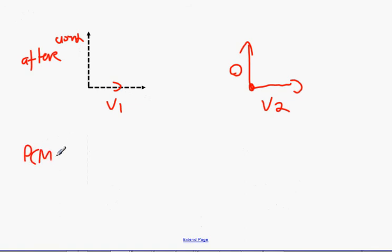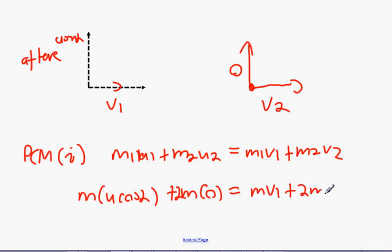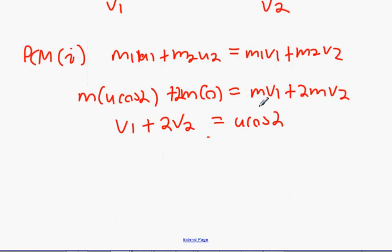We're next going to use PCM, principal conservation momentum, along the i-axis. M1 V1 plus M2 V2. So we're going to have M times U cos alpha. Might as well leave it as U cos alpha. M times 2M times zero equals M V1 plus 2M times V2. And what we're going to get here is 2V2. V1 plus 2V2 equals U cos alpha. And that represents the principle of conservation momentum equation.